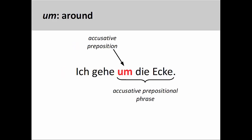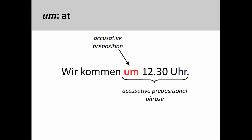Finally, the preposition um can mean either around a physical object, such as Ich gehe um die Ecke — I am going around the corner. Or, in the case of time expressions, um can mean at a specific point in time, such as Wir kommen um zwölf Uhr dreißig — We are coming at 12:30 p.m.